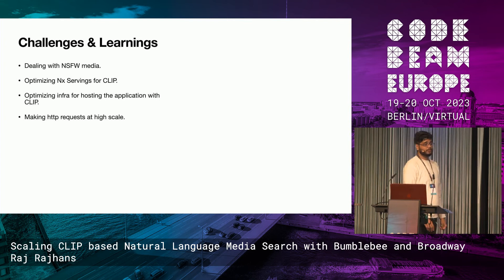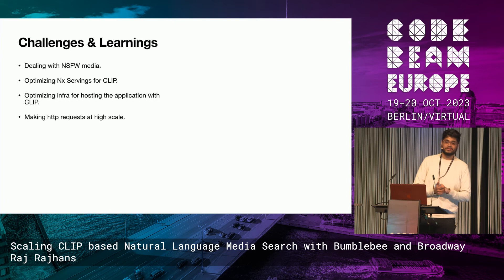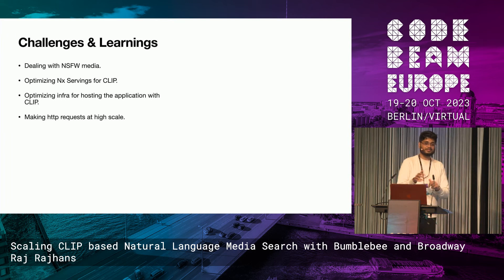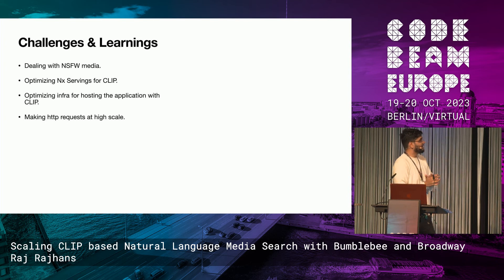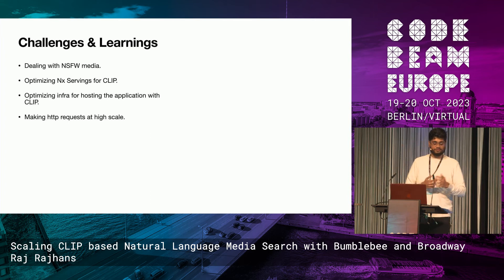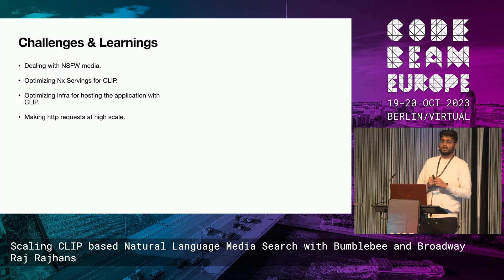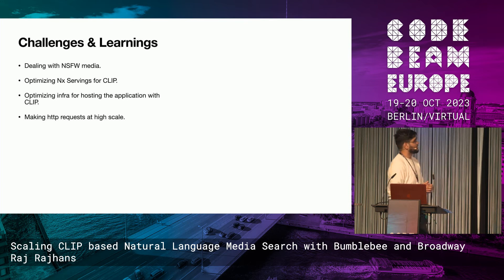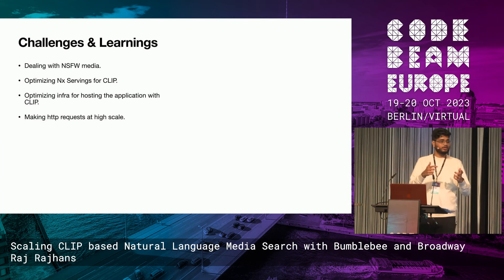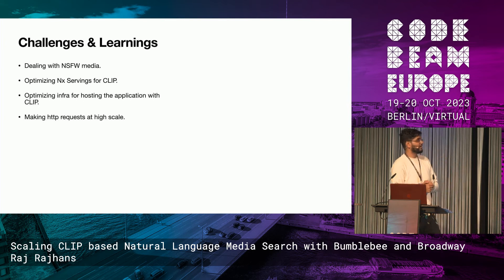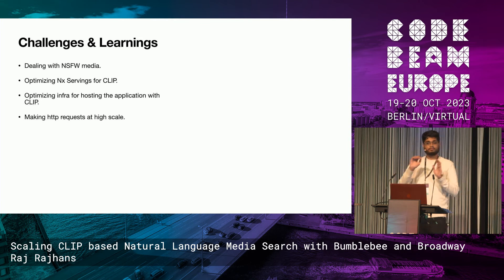We did encounter a few challenges. The first was dealing with NSFW media — the CLIP model that was trained is actually very biased because they censored NSFW content while training, so for some queries it unfortunately biases NSFW media more. We also had to learn how to optimize all the different NX servings. In our case, we found that you can either go with GPU for embeddings and machine learning, but that's again costly. We found that C5 instances in AWS were the sweet spot between the throughput we needed and cost savings. Finally, for the media crawling, we had to make HTTP requests at very high scale — thousands and hundreds of thousands of HTTP requests at once — so we had to go through each of the HTTP libraries, figure out the bottleneck, and make sure the configuration was correct.